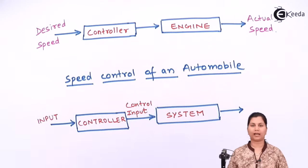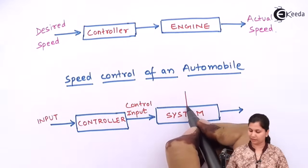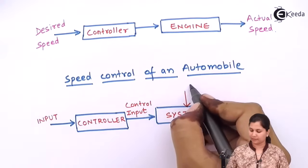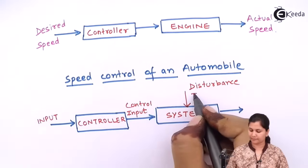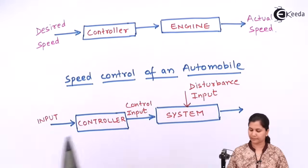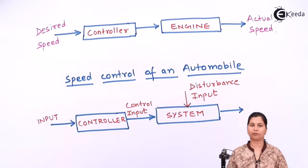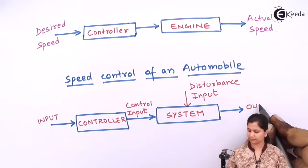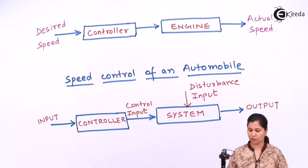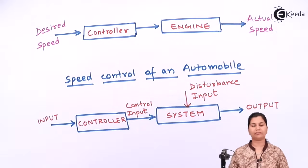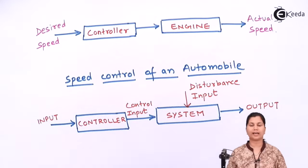Those disturbances are known as external disturbances. We have a disturbance input acting on the system. The signal coming out of the system is called the output of the system. This is the way in which we can represent a generalized open-loop control system.